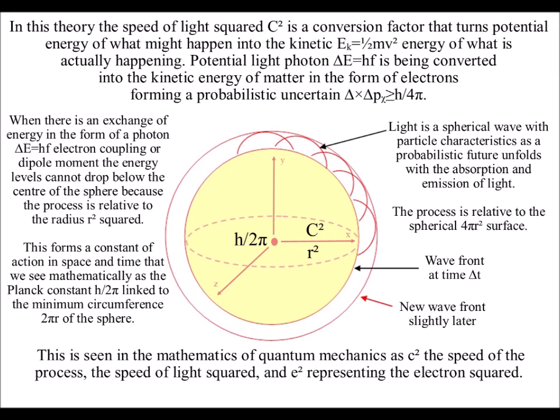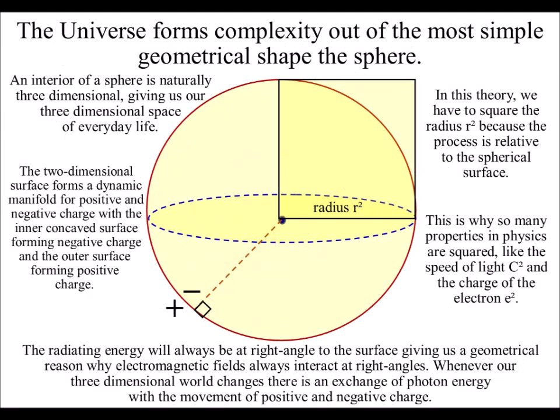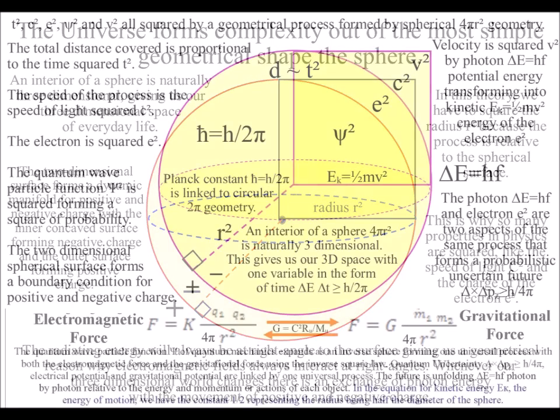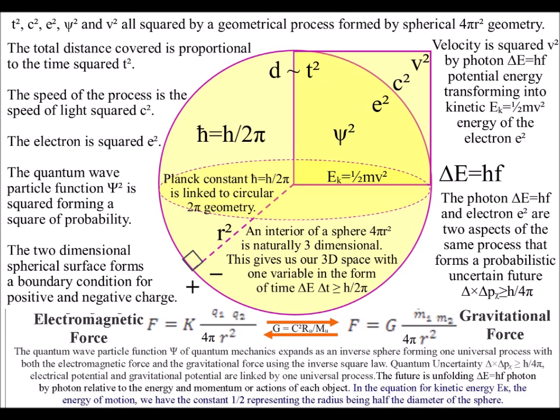In this theory, we have to square the radius because the process is relative to the spherical surface. This is why so many properties in physics are squared, like the speed of light, c squared, and the charge of the electron, e squared. This is because the two-dimensional surface forms a dynamic manifold for positive and negative charge, with the inner concave surface forming negative charge, and the outer surface forming positive charge.